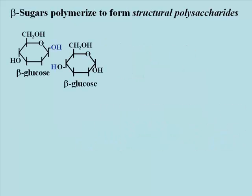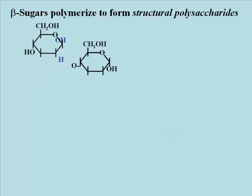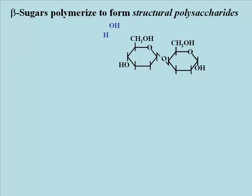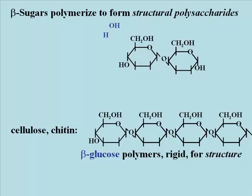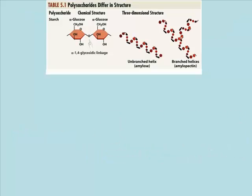If beta glucose anomers are polymerized in condensation reactions like the one shown here, the beta glycoside linkages that form — here it's a beta 1-4 glycoside linkage — create a rigid, inflexible polysaccharide like cellulose or chitin. Criss-crossing laminas of cellulose are laid down to form plant cell walls. A modified sugar called N-acetylglucosamine will polymerize to form chitin. Chitin is the main component of fungal cell walls and is the major component of the hard exoskeleton of insects and crustaceans like lobsters.